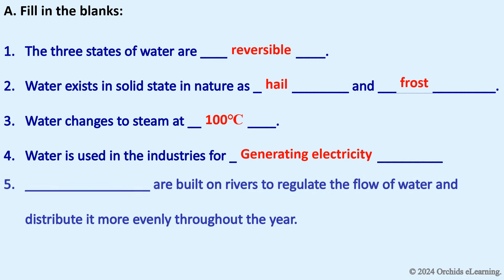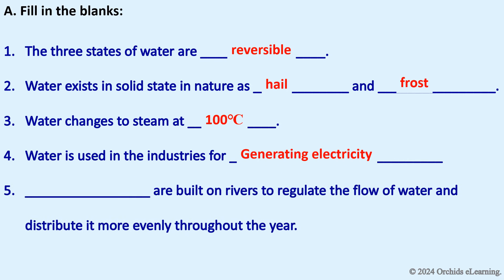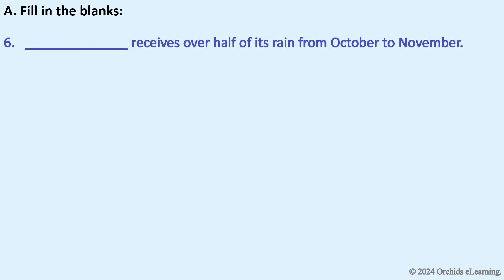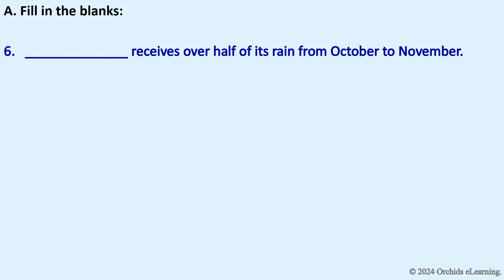Dams are built on rivers to regulate the flow of water and distribute it more evenly throughout the year. Tamil Nadu receives over half of its rain from October to November.